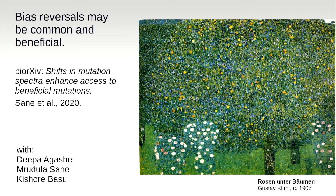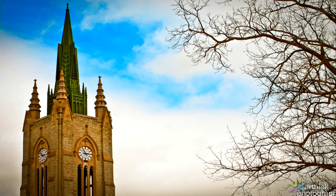My bottom line is that bias reversals should be common in evolutionary trajectories — for what I think are sort of self-evident reasons once you've thought about it — that it would be good after adapting with one bias to switch over to the other team for a while. I'll refer you to the bioRxiv paper, 'Shifts in Mutation Spectra Enhance Access to Beneficial Mutations.' I'll thank Deepa, Myrtala, and Kishore, who have been absolutely wonderful to work with. And a shout-out to Gustav Klimt as well for his beautiful painting of a tree and fruit.